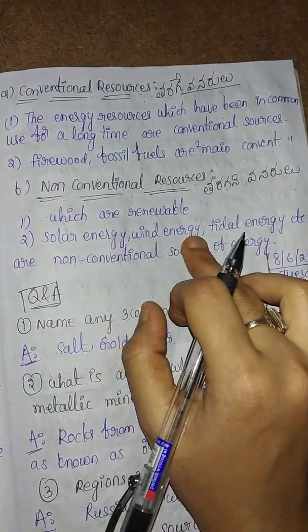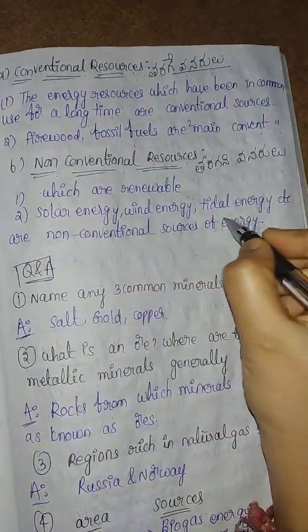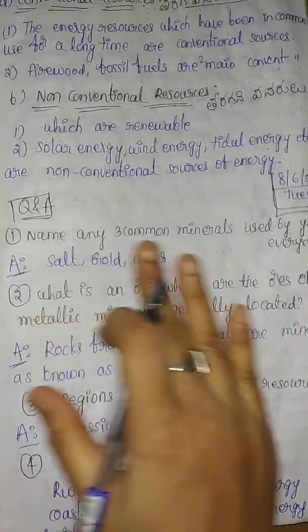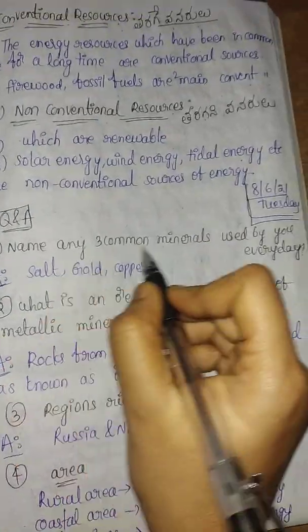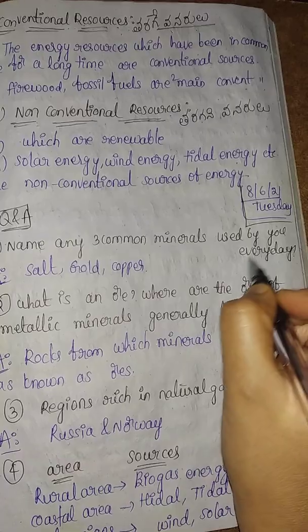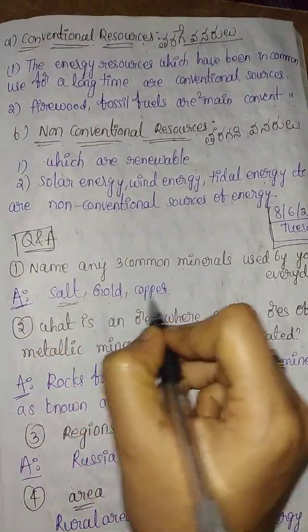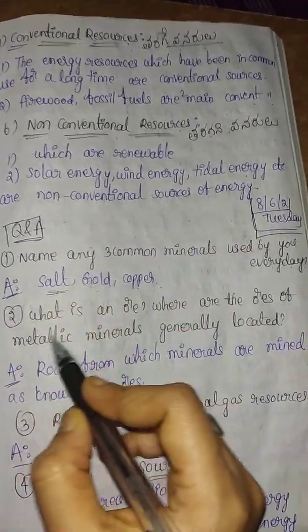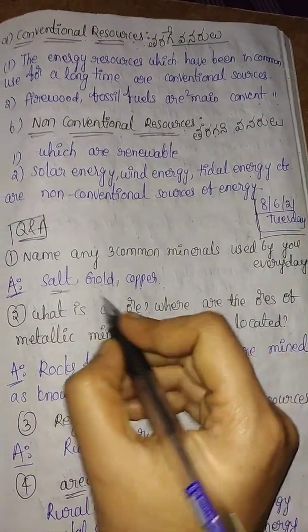Questions and answers can be discussed in the video. Name three common minerals used in everyday life. What is an ore? Where are the ores of metallic minerals generally located?